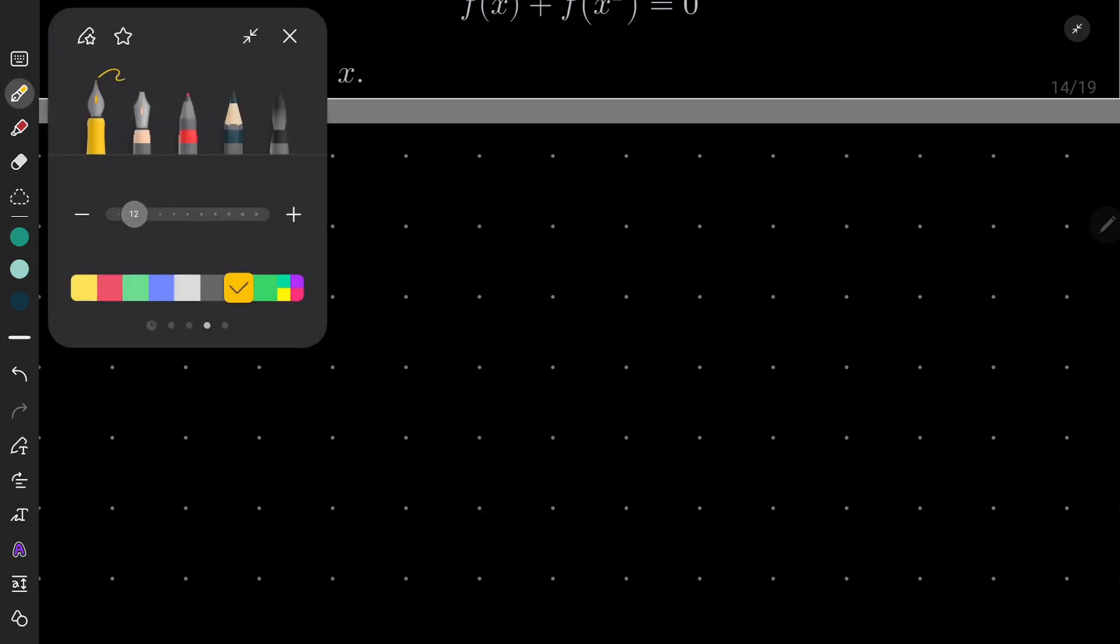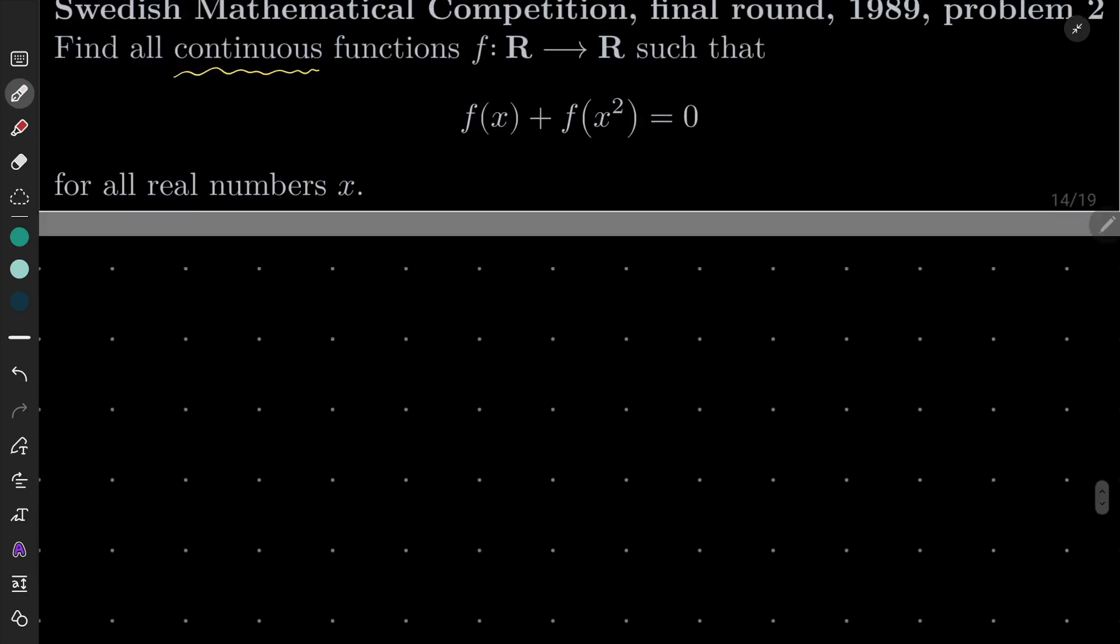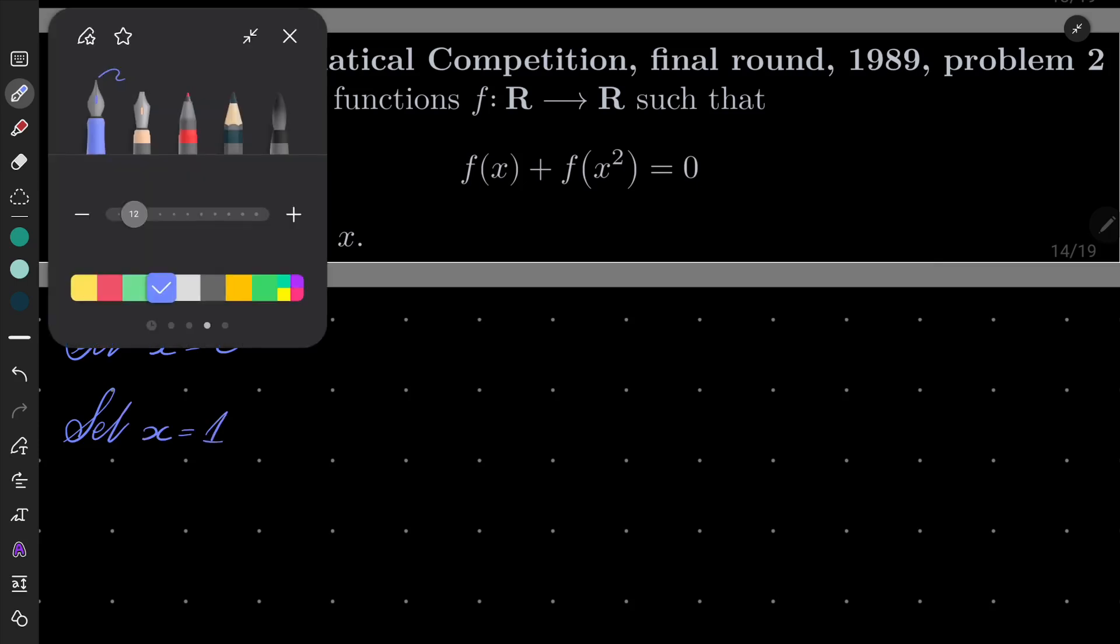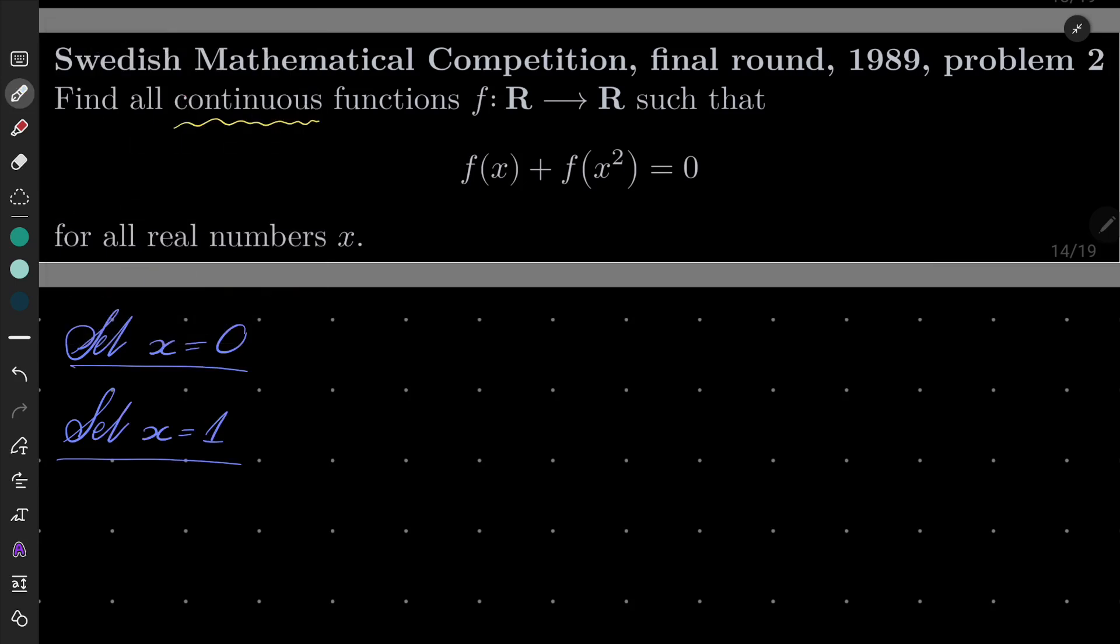Okay, so my solution. First of all, let's set some values. Set x equals 0 and then we will set x equals 1. What happens now? Well, if x is 0, we have just 2 times f of 0 equals 0, which of course implies that f of 0 equals 0. And very similar is the case of number 1, 2 times f of 1 equals 0, which means that f of 1 equals 0.